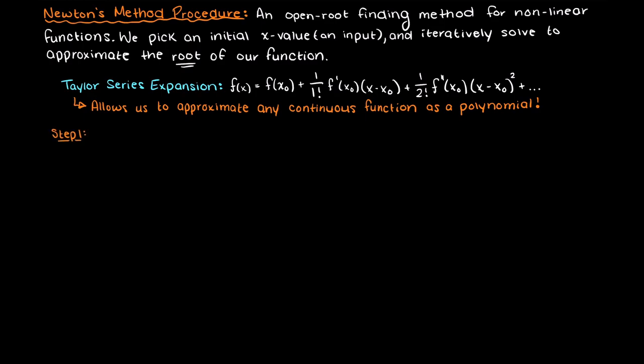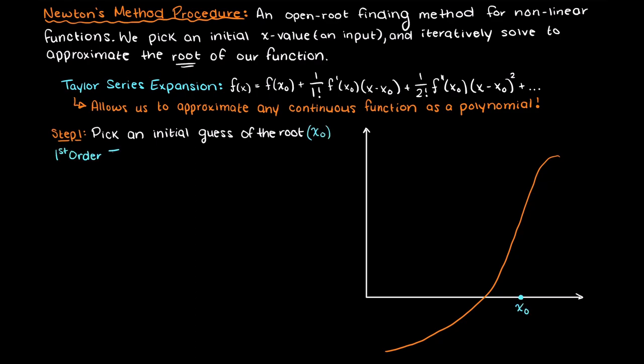Firstly, just like any other open root finding method we must start with an initial guess of our root. So we take a guess at the x input on which we think our root might lie. Then we create a first order Taylor series expansion at that x value guess. So a first order Taylor series approximation looks like this.